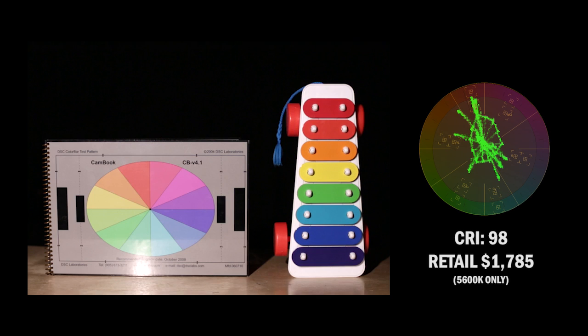Here's our tungsten again, and here's our 98 CRI rated light. Now the retail on this is $1,785, but it's important to note that that is a 5600K only light. So realistically, it maybe costs about a hundred to two hundred dollars more than the previous lights we've been looking at. So not a huge difference in price.